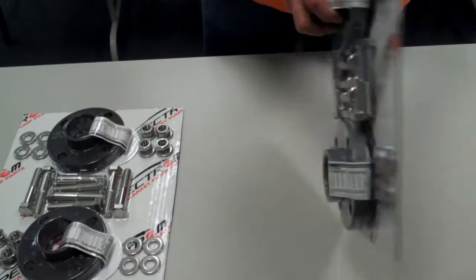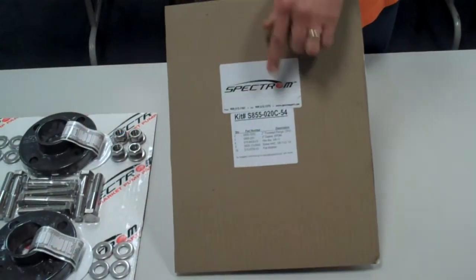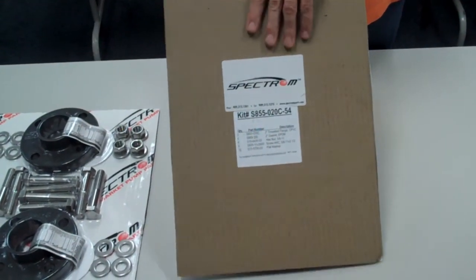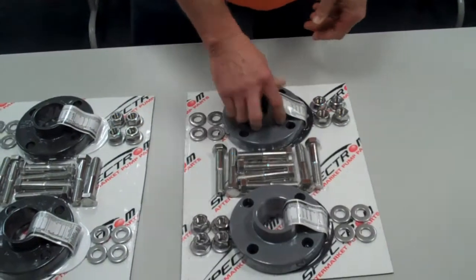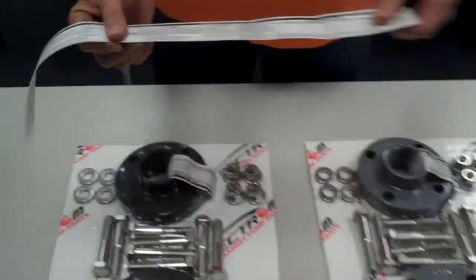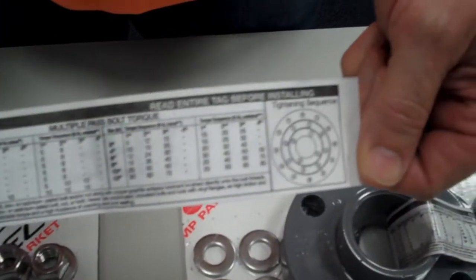Each kit will include the bill of material on the back of the package. Also included is a set of assembly instructions, which includes the torquing sequence.